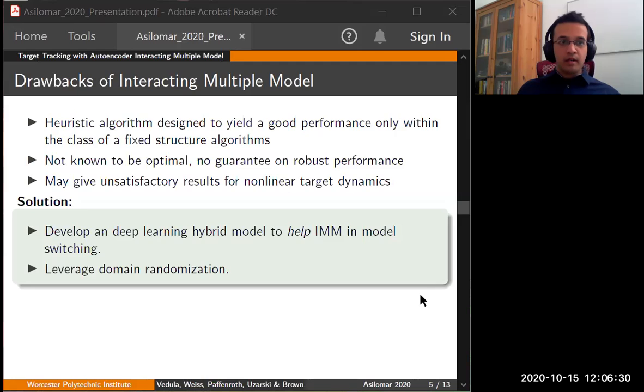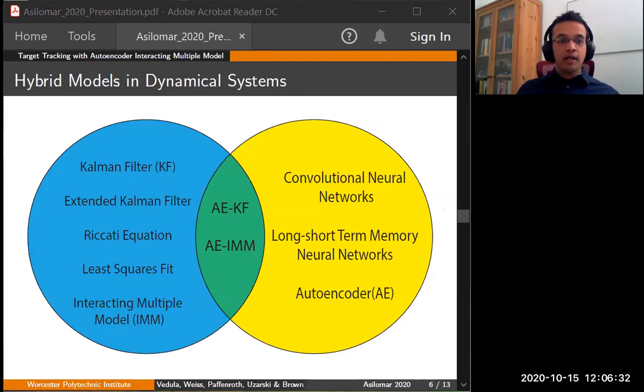Let's see what we mean by a hybrid model. On the left side in blue, we have traditional state estimation and prediction models. On the right-hand side in yellow, we have machine learning models. Hybrid models combine these two approaches. That means we keep the KF and IMM framework intact and add neural networks or any machine learning approach around this structure.